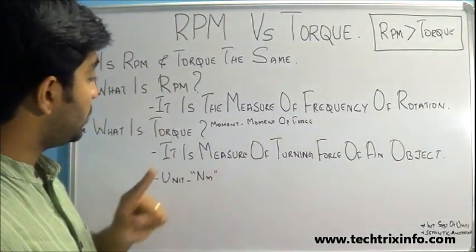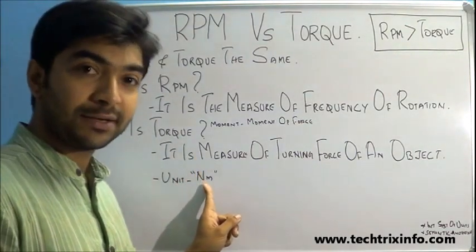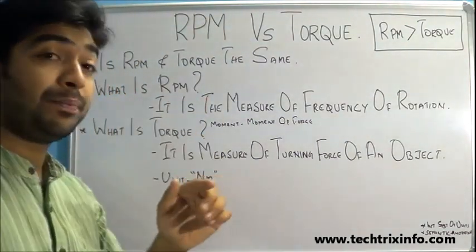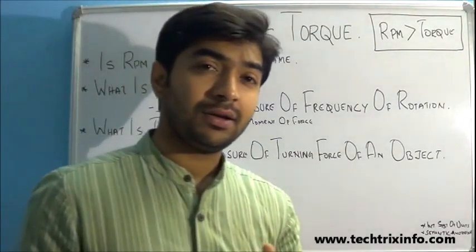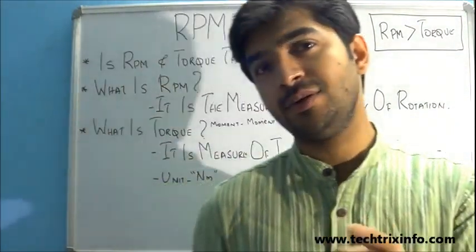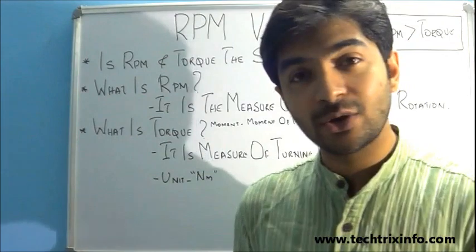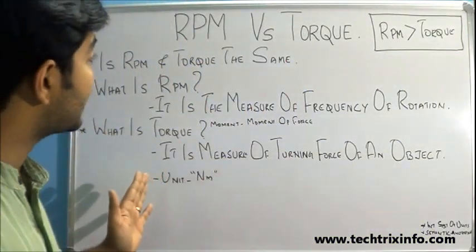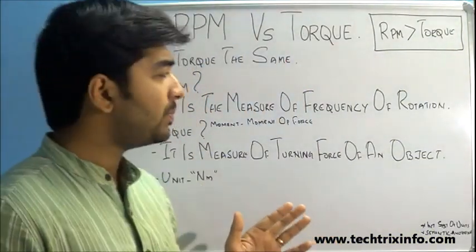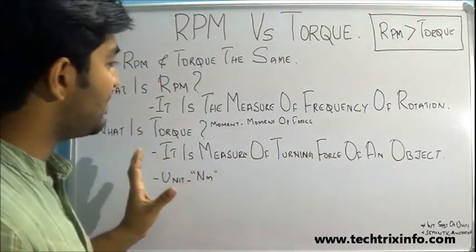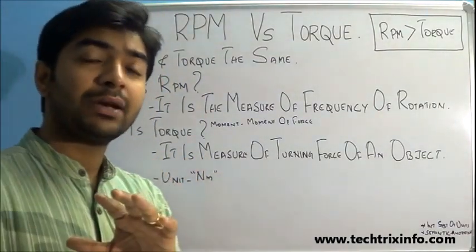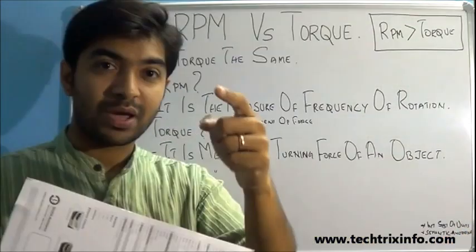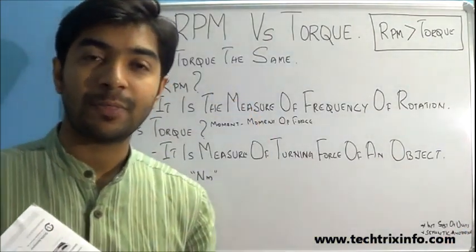The unit of torque is the Newton meter. And is RPM a unit? No — RPM is definitely not a unit according to the International System of Units. RPM is just a semantic annotation, and semantic annotations cannot be considered as a unit.